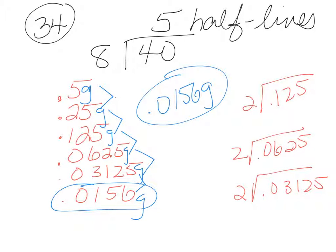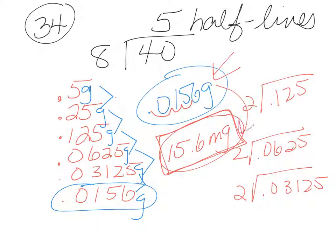Now, on an FRQ, you can just leave it as grams, but what if this is a multiple-choice question, and the answers are only in milligrams? And so if we were to change this to milligrams, we'd move it over three places, and that would be 15.6 milligrams. Again, on an FRQ, they would accept both ways to write the answer, but on a multiple-choice, they might not have this one, and so you would need to be able to recognize that grams goes to milligrams.